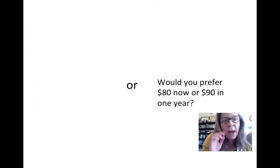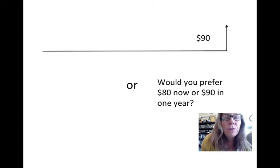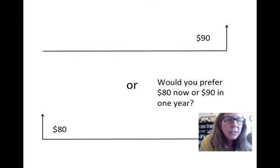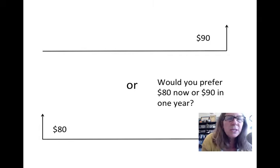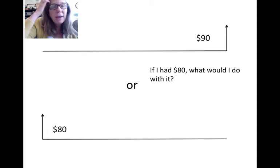This allows us to ask typical engineering economy questions. For example: would you prefer $80 now or $90 in one year? Drawing this on a timeline, we can see $80 now or $90 in one year. If there were no timing issue, we'd obviously want $90, but the problem is one occurs now and one occurs in the future.